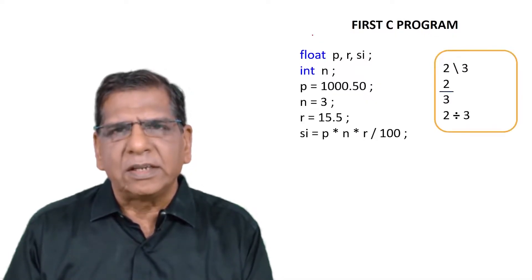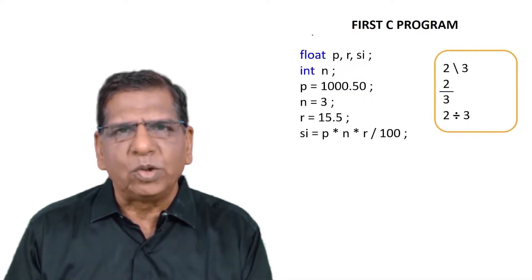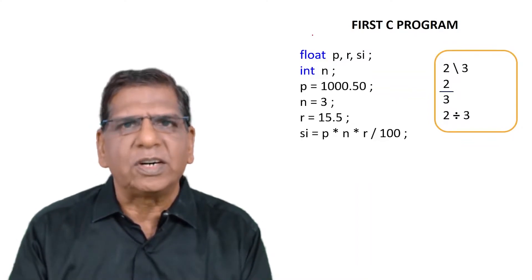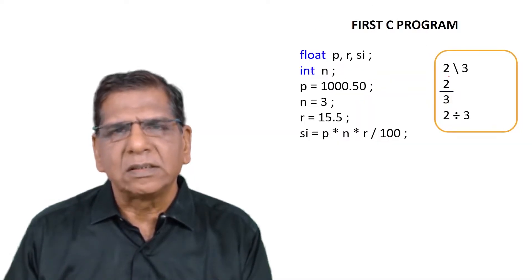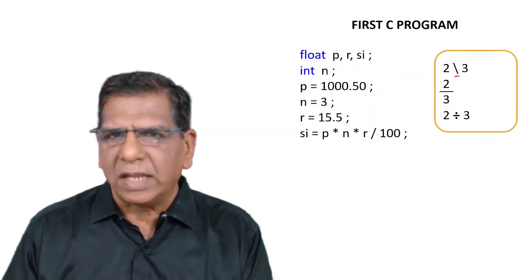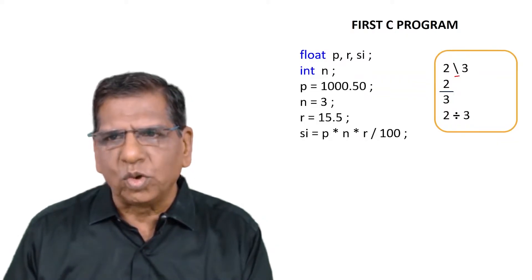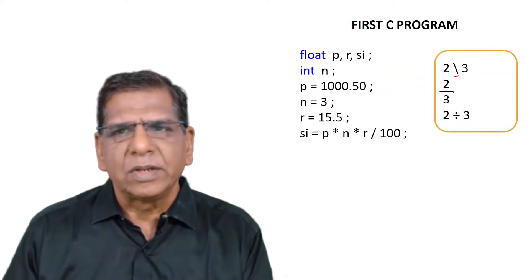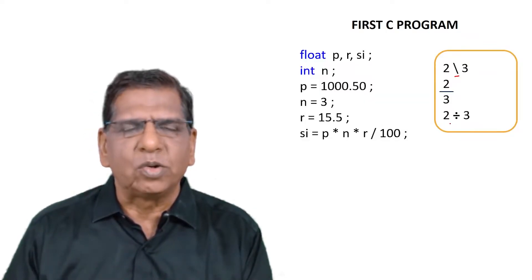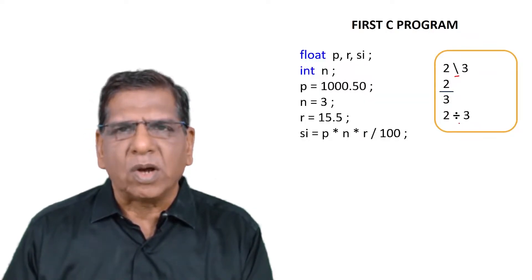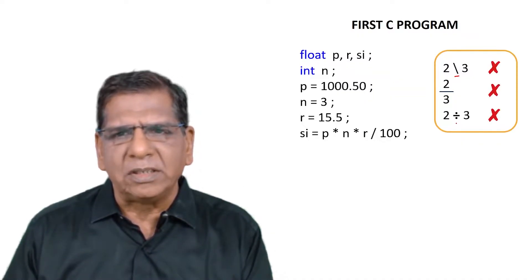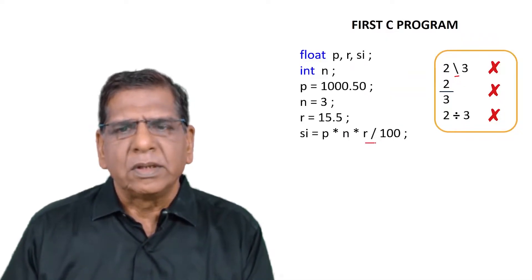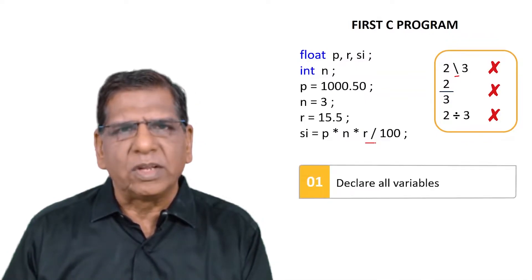Do realize that when I say SI equal to P into n into r slash 100, read that slash. Try to make use of a backslash. That doesn't work. Don't try to set 2 upon 3. Don't use this symbol for division to indicate 2 divided by 3. So all these three are wrong. The only way we can carry out division in C programming is using the slash operator.